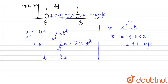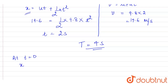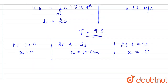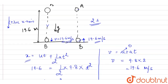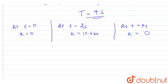The total journey is 4 seconds. Now let's look at the displacement: at time t = 0, displacement is 0; at t = 2 seconds, displacement is 19.6 meters; and at t = 4 seconds, displacement is again 0. In path A to B the velocity increases because acceleration is downwards, and in path B to A the velocity decreases because acceleration acts opposite to the direction of velocity. Let's create our displacement-time graph.